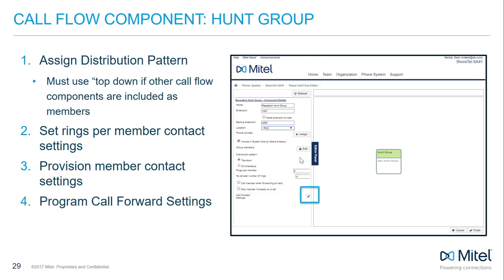The final selection includes call forwarding settings related to what we've set above, as well as scheduling and other conditions. Click the pencil icon to expand the section and show all the optional call forwarding conditional programming. Everything included in this section of the hunt group is optional — you do not need to program anything here to save the hunt group.